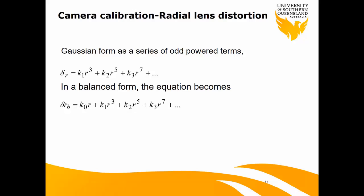If you run the camera calibration, as we did last year, you get some parameters — as I said, C, which is the principal distance, and the coordinates of the principal point. You will see something like this, some of these parameters. That's why I'm trying to tell you what they are and how you're going to interpret them if there is any problem. Like if your K1 is out or K2 — what is that? What is the problem? How are you going to fix it?